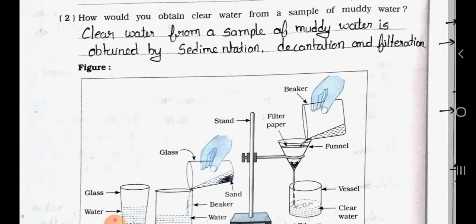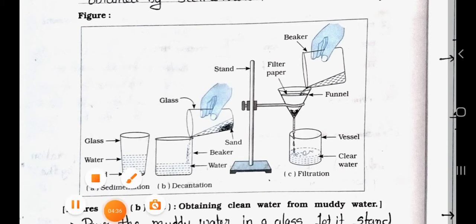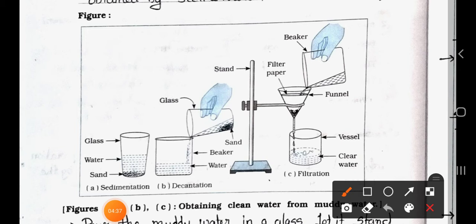Now see the figure. In the above question we have seen that much is the same: glass, water, sand. Here also the process is the same, plus filtration. See here the stand is there, filter paper is there, funnel is there, and triangular funnel is there. Here is a funnel, here is a vessel.